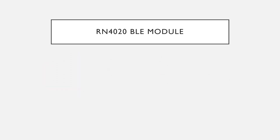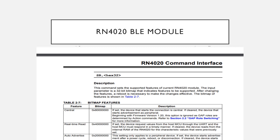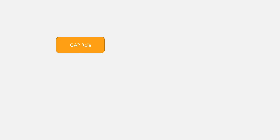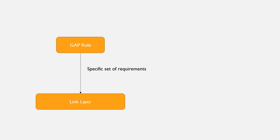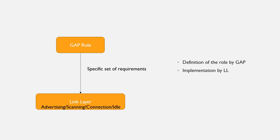If you are using a module which can be configured via AT commands, then simply by typing certain commands you can configure your BLE device to run in a particular role. Thus, each GAP role provides a specific set of requirements to the underlying controller or the link layer. In other words, GAP provides access to the link layer operations. Implementations of the rules laid out by GAP for a particular role are taken care of by the link layer — meaning the actual job is done by the link layer, and what needs to be done or which role we want is defined by GAP.